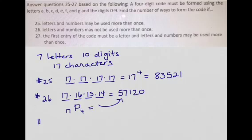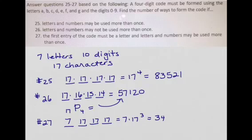Now for the last one number 27 here it says the first entry of the code must be a letter. So again I have four characters to select and the first one has to be a letter, there's only seven of those and letters and numbers may be used more than once. So I only have a restriction on the first entry has to be a letter and then everything after that can be any letter or any number and I can calculate this by multiplying seven times 17 to the power of three and that gives me 34,391 and that's how we get the answers to those problems.